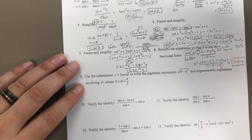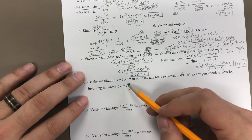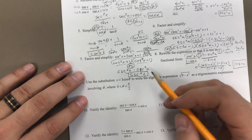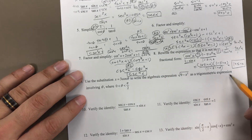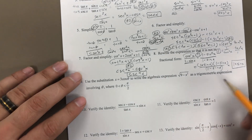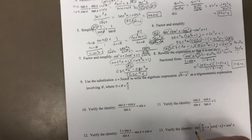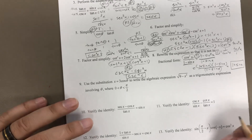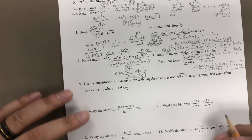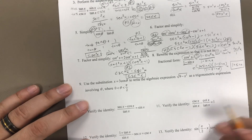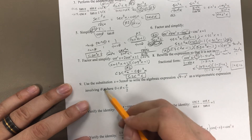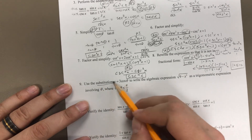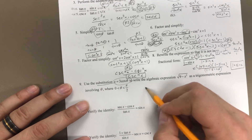So this says: use the substitution x equals 3 cosine of theta to write the algebraic expression as a trigonometric expression involving theta, where theta is between 0 and pi halves. We didn't do any of these problems in the homework, but it's pretty easy — it tells you what to do. You substitute this in for x. So let's see what we get.